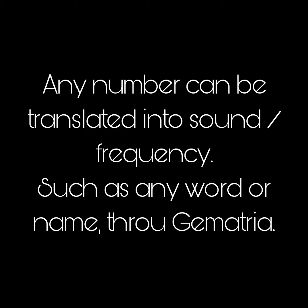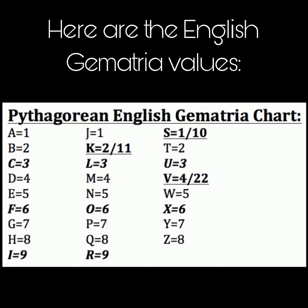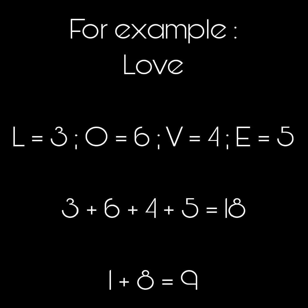Any number can be translated into sound or frequency, such as any word or name through geometria. Here are the English geometria values. For example, love: L equals 3, O equals 6, and so on.